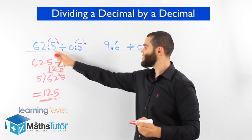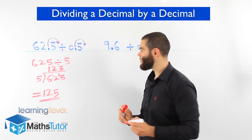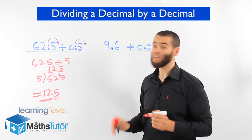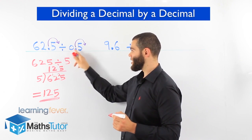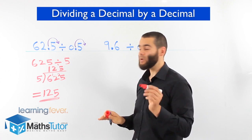So 62.5 divided by 0.5 is 125. When you look at the question, look at the answer, you think, whoa, what a big difference. But that's how it is. 62.5 divided by 0.5. A decimal divided by a decimal. We can't actually do it. So we have this little trick.